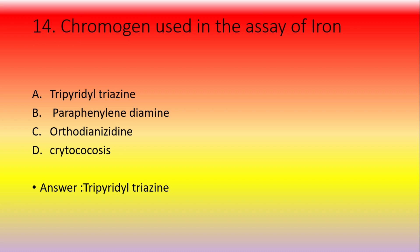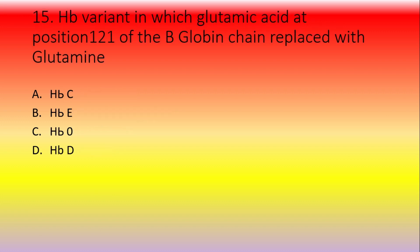Hb variant in which glutamic acid at position 121 of the beta-globin chain is replaced with glutamine — option A: HbC, option B: HbE, option C: HbO, option D: HbD. The answer is HbD (Punjab variety). HbC, HbE are mainly replacements occurring at the sixth position, where glutamic acid is replaced by lysine.